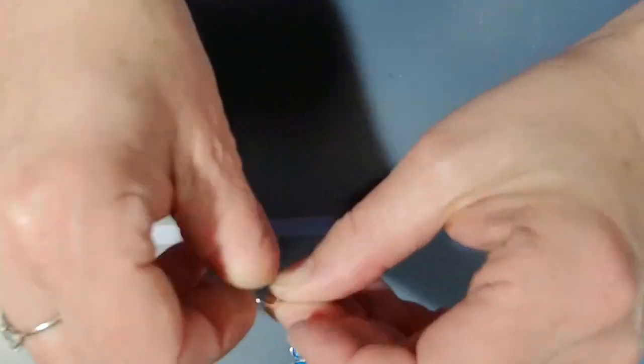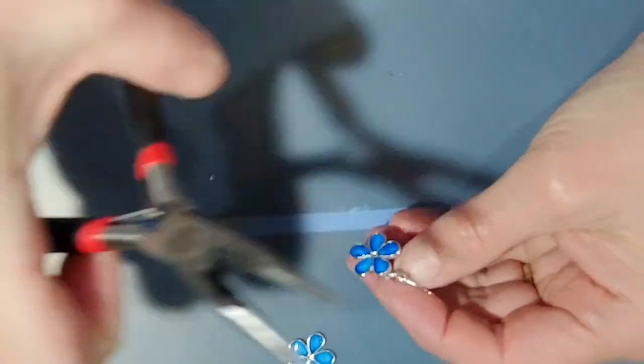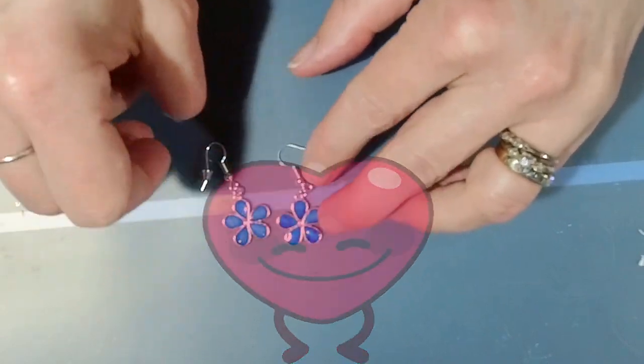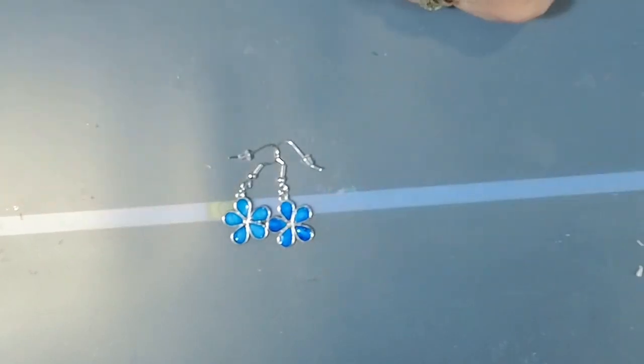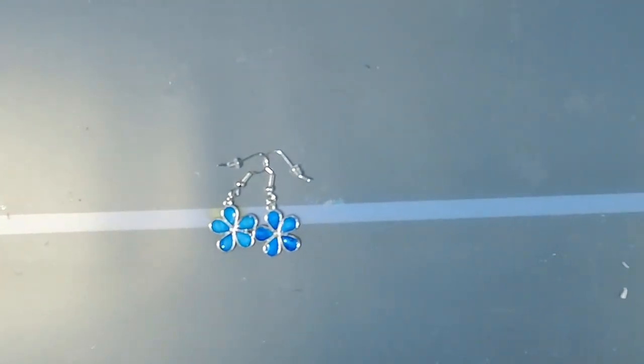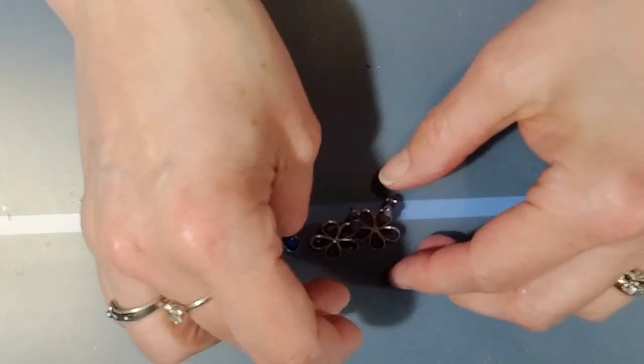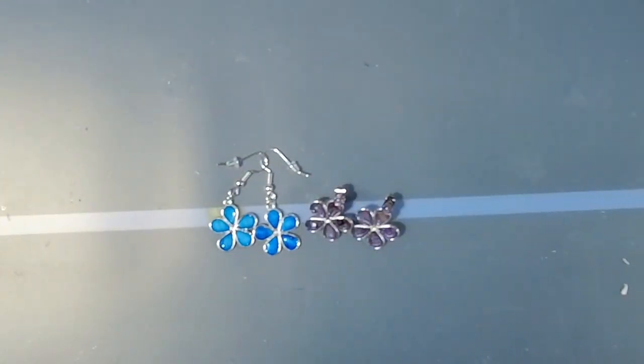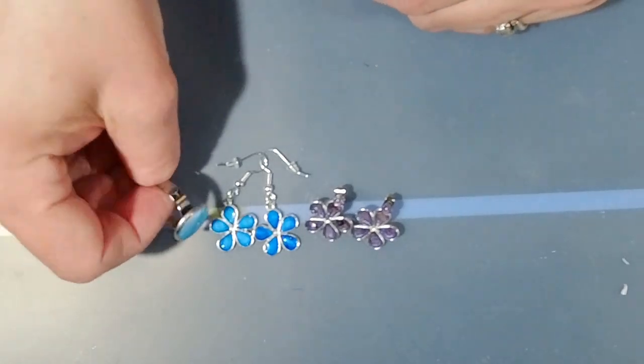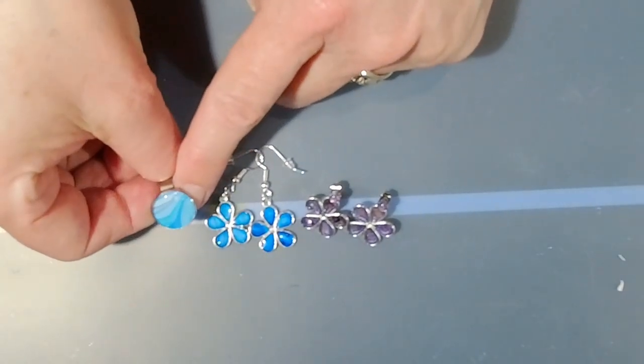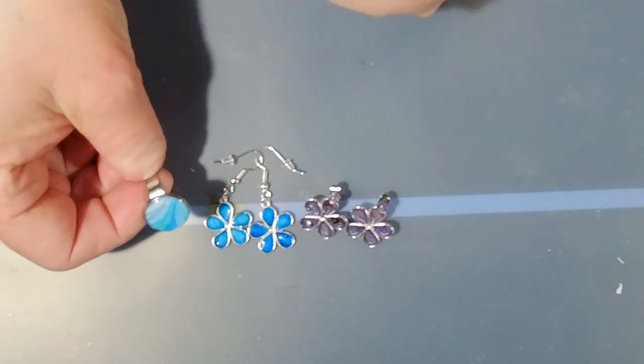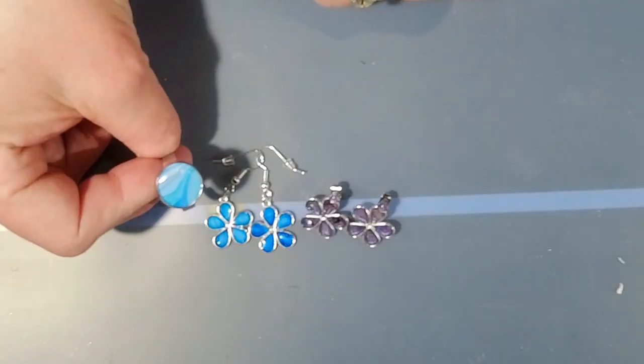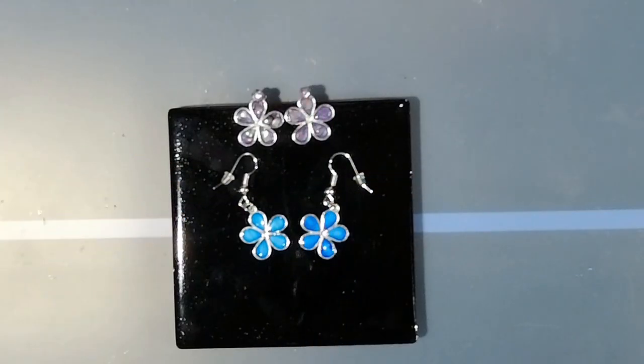And we have two really cute flower earrings. Next time a lighter color. But it was so much fun. I really enjoyed it. I hope you all enjoyed it and how to make these really cute earrings, as well as this really cute ring right here. I did that earlier. I just cut out a piece of my paint skin and just put some clear UV resin on top. And I have myself a ring. And here are the finished earrings.